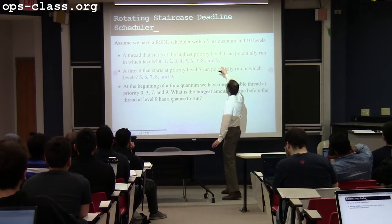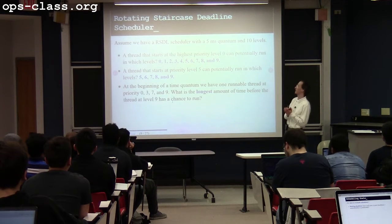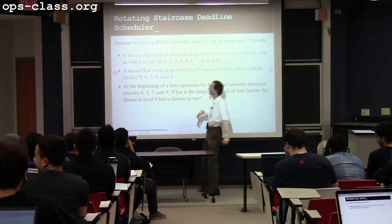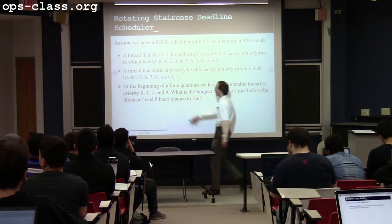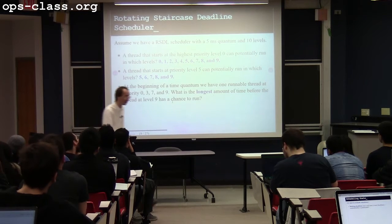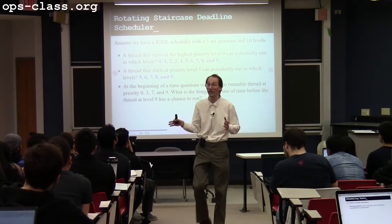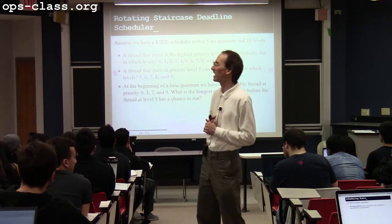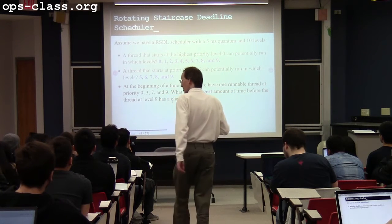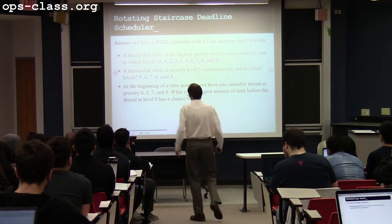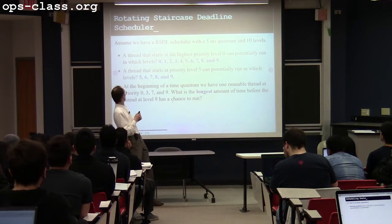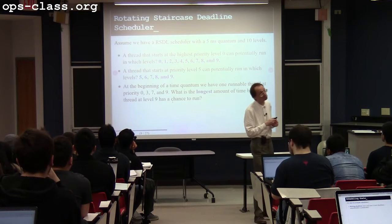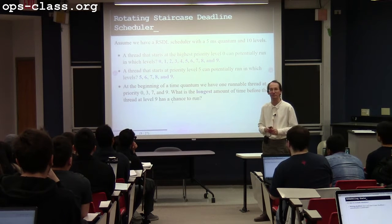With the rotating staircase, we have different levels of priority. Say we have something at the second-to-lowest priority level with three threads at time slots 0, 3, and 7. The worst-case scenario: you take the time quanta for each of those three threads and multiply it out — we get 15 milliseconds. Something like this might show up as a short answer on the test, where you'd be asked to do a little computation.